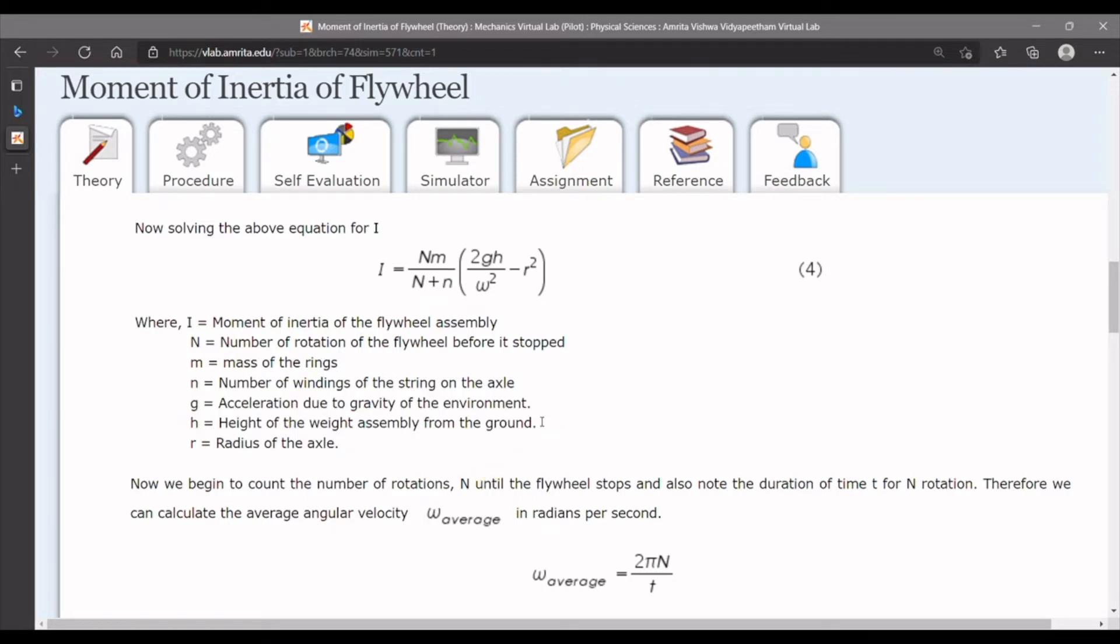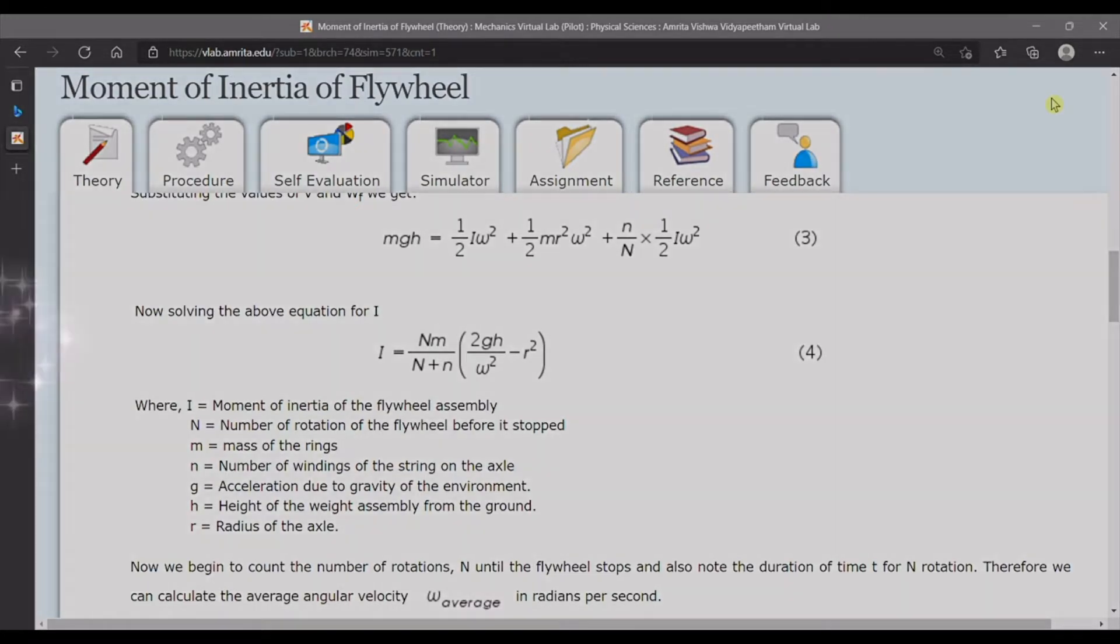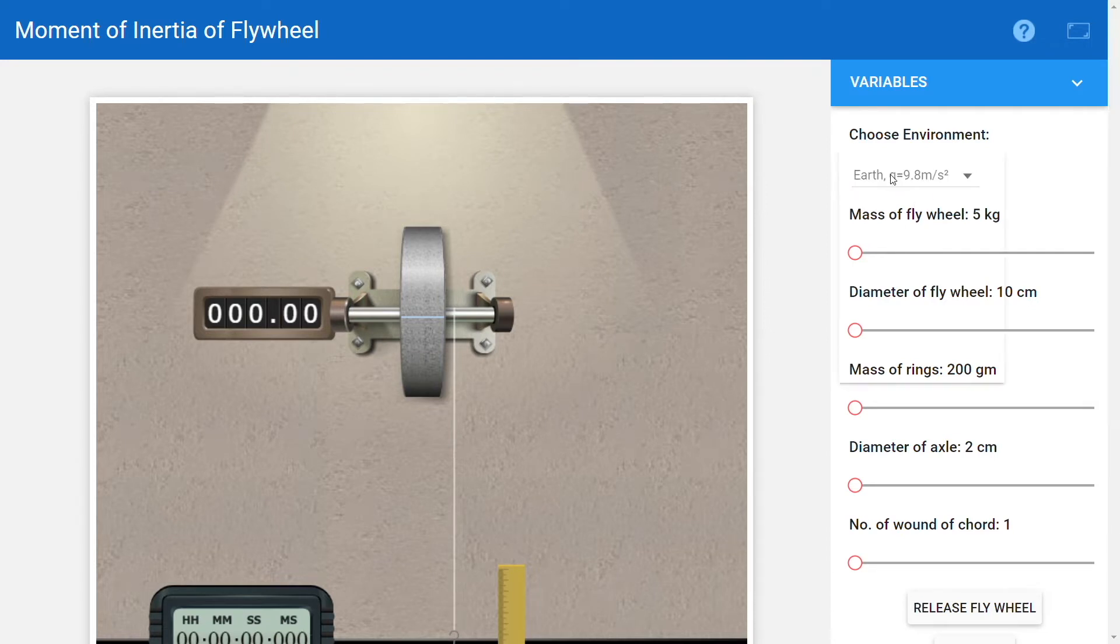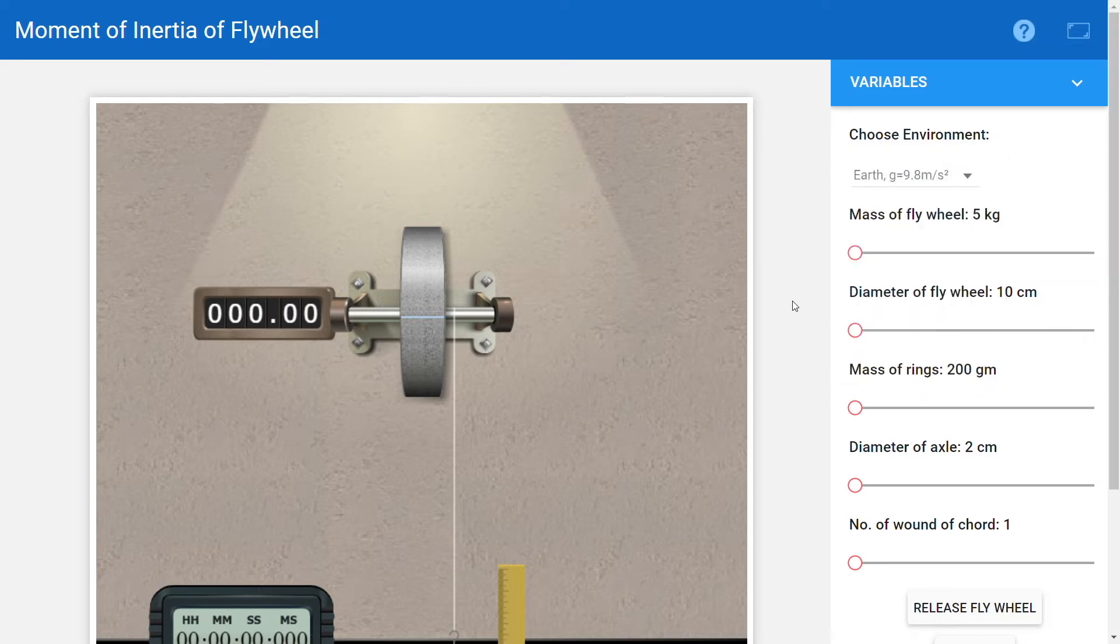But if anyone would like to perform this experiment with Elon Musk at Mars, we have to take the gravity of Mars accordingly. You can choose the value of g. Here the values of g for Earth, Moon, Uranus, Saturn, and Jupiter are given, so you can choose any one of them.